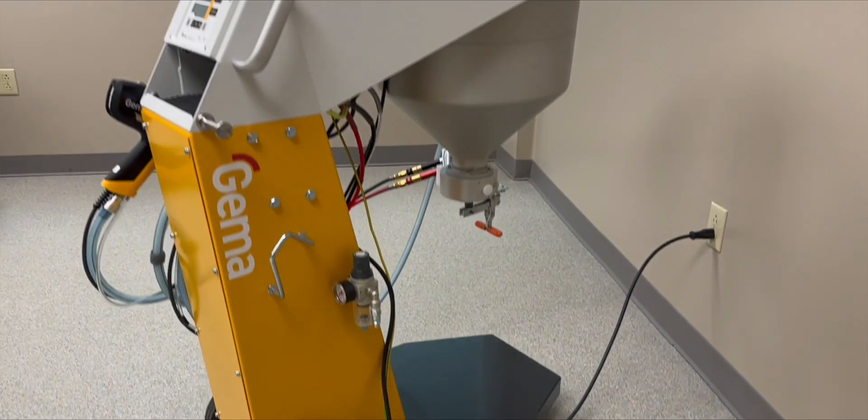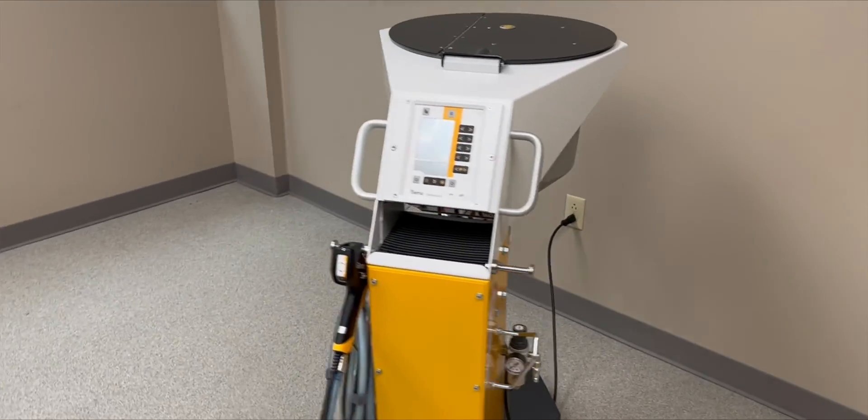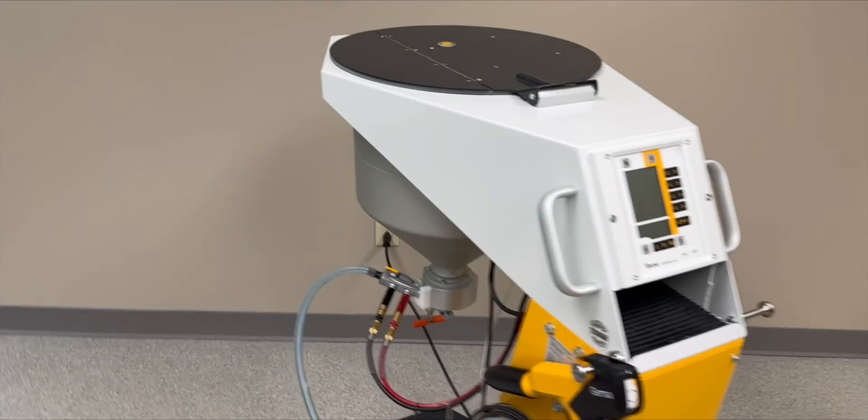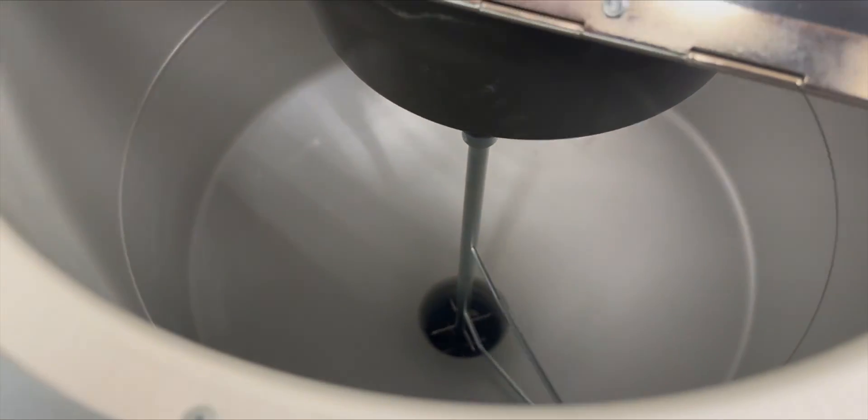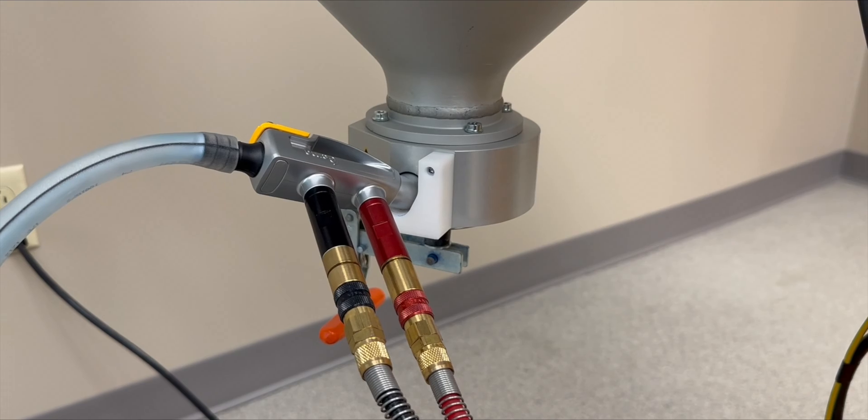The stirrer unit has an 18 liter hopper capacity and can process powders that don't easily fluidize with components that tend to separate by constantly stirring the material prior to being fed through the system.